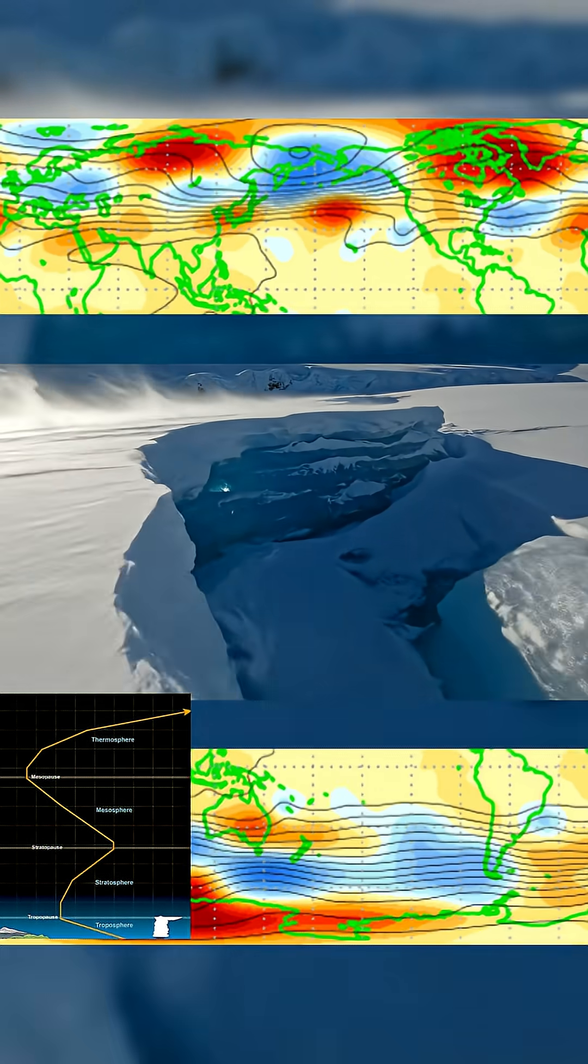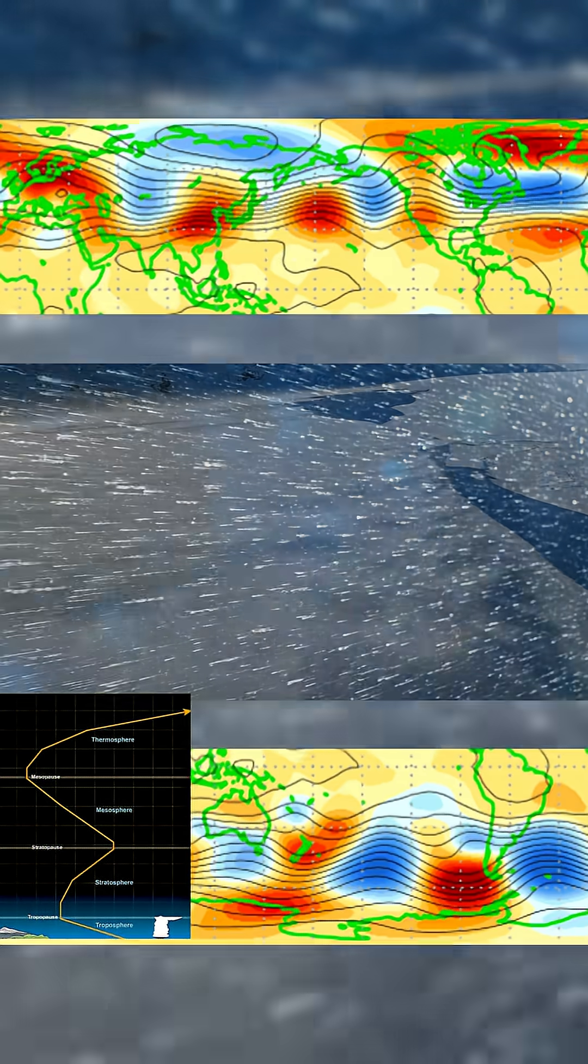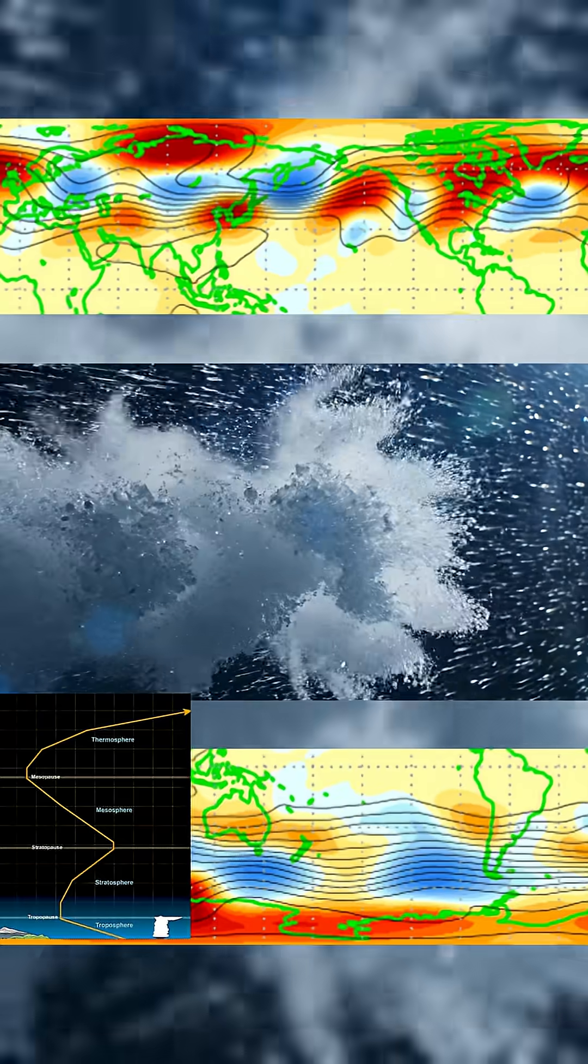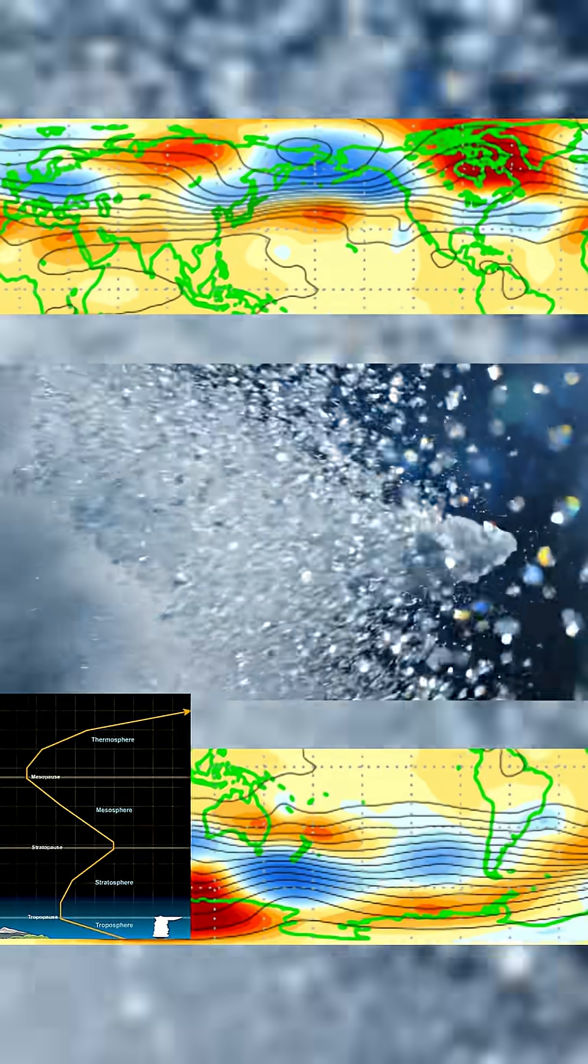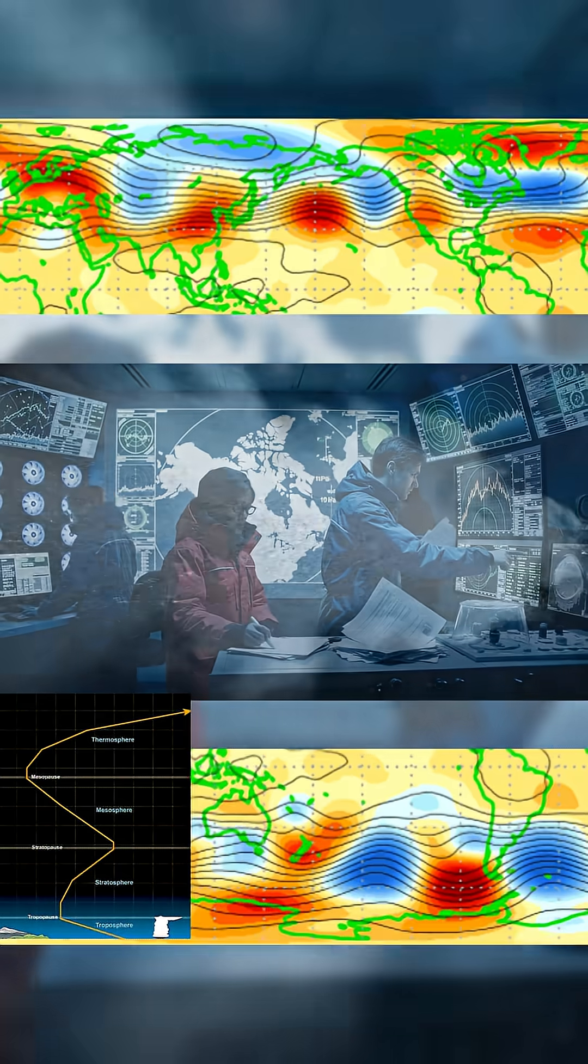Instruments aboard the Aura satellite show that circulation wobbling. When those winds reverse, the polar vortex begins to unravel. Its walls collapse, and dense arctic air surges south through weakened jet stream corridors.